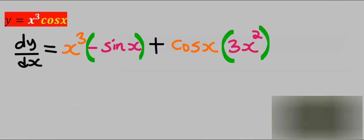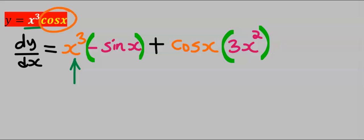Let's consider this question here. We're going to keep x to the power of 3 constant, then we're going to differentiate cos x and we're going to have minus sine x.